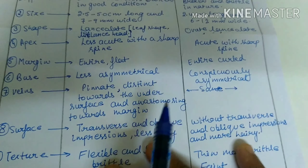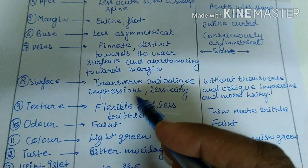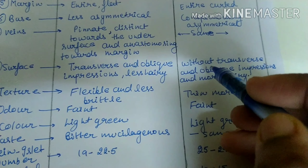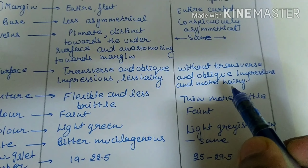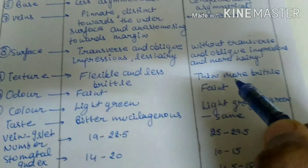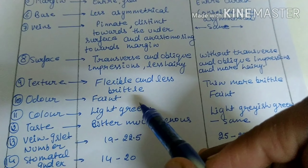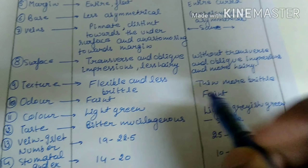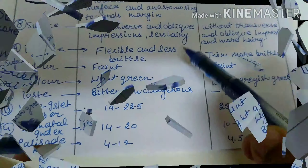Regarding surface, Indian Senna has transverse and oblique impressions with less hairy structures, while Alexandrian Senna is without transverse and oblique impressions and is more hairy. The texture of Indian Senna is flexible and less brittle, while Alexandrian Senna is thin and more brittle. Both Alexandrian Senna and Indian Senna have faint odour. The colour of Indian Senna is light green and Alexandrian Senna is light grey.